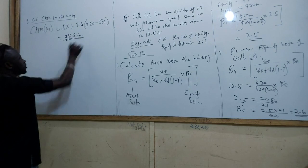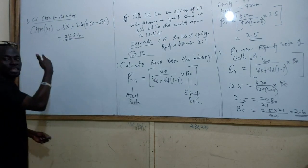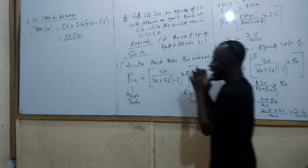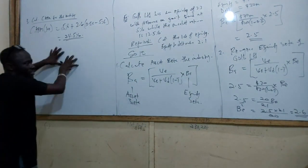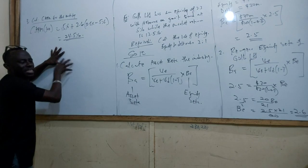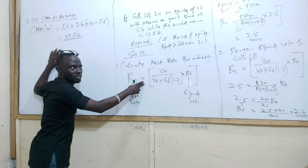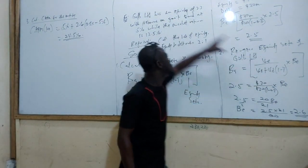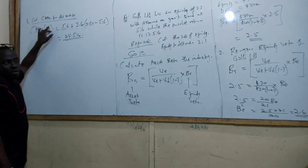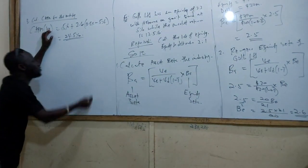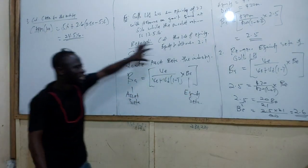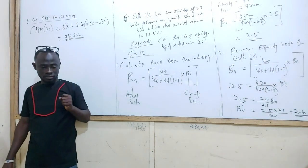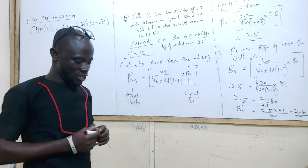If we had been given the asset beta directly, we would skip the first step and go straight to re-gearing the equity beta for the company. But since we were given an equity beta for the proxy firm, we first had to calculate the asset beta for that industry, then use it to re-gear the equity beta for Gulp Limited before calculating the cost of capital.